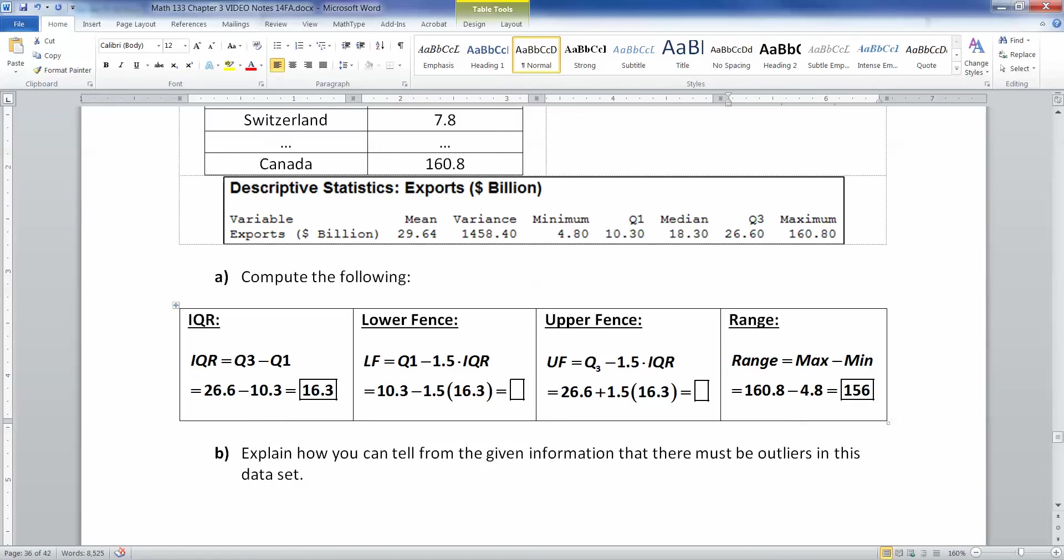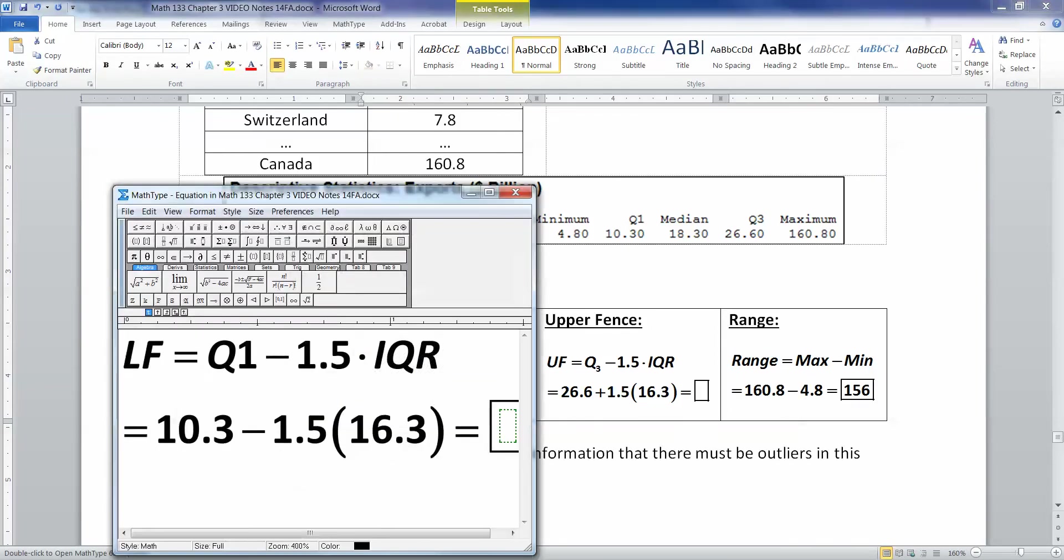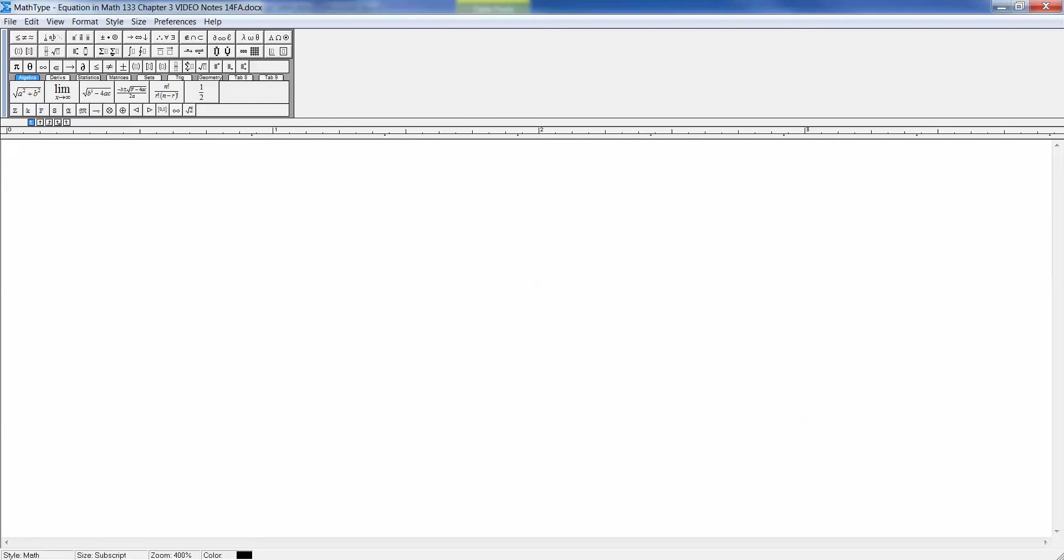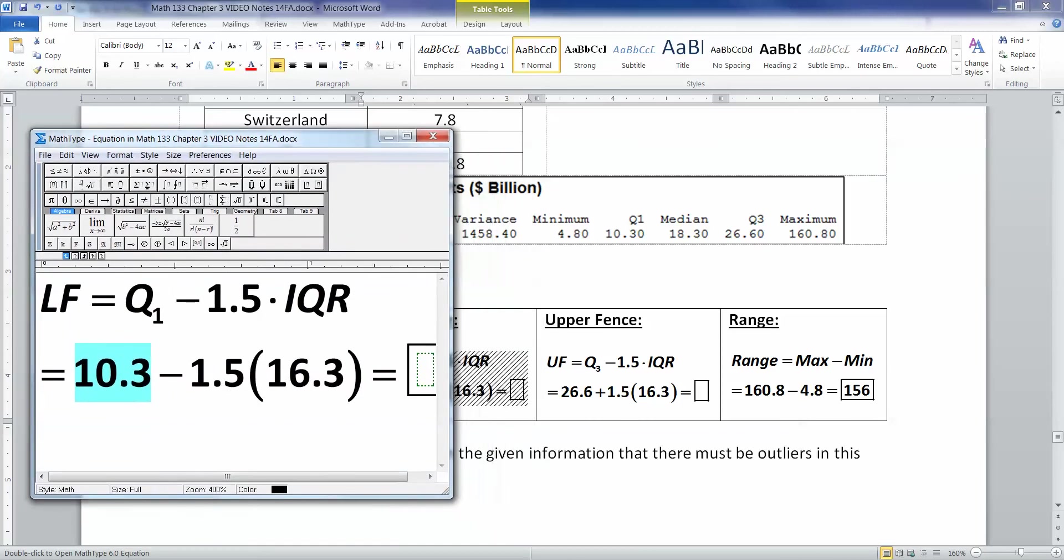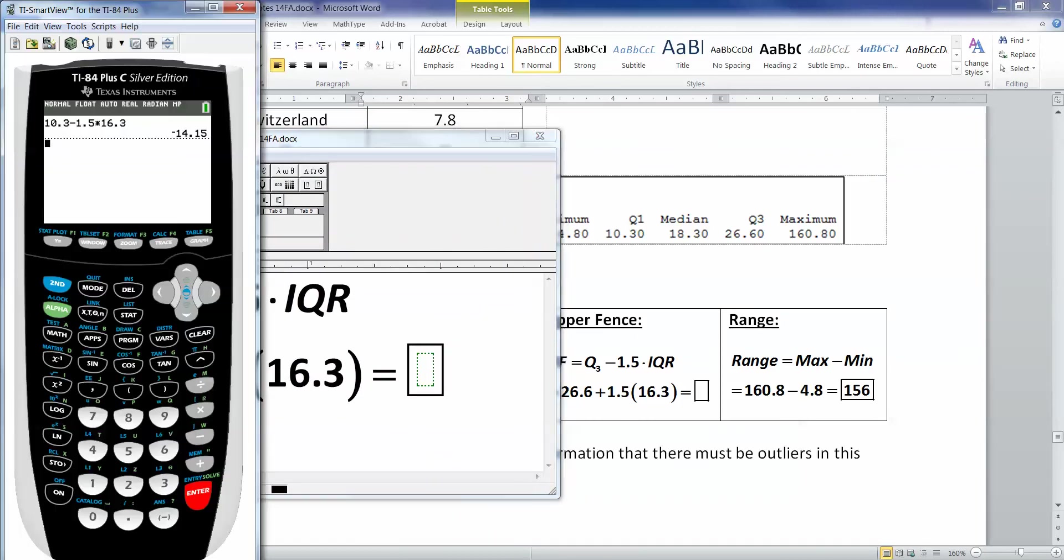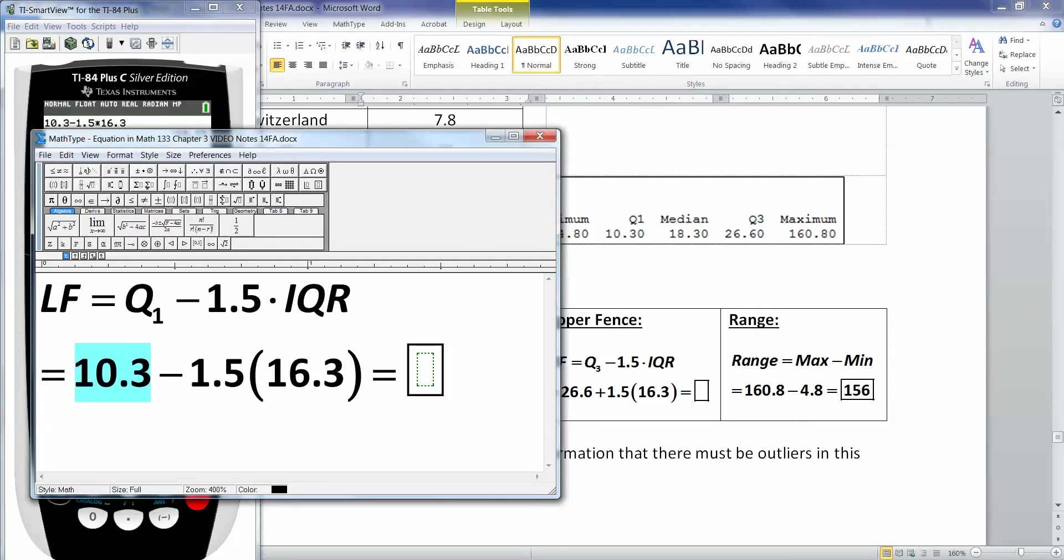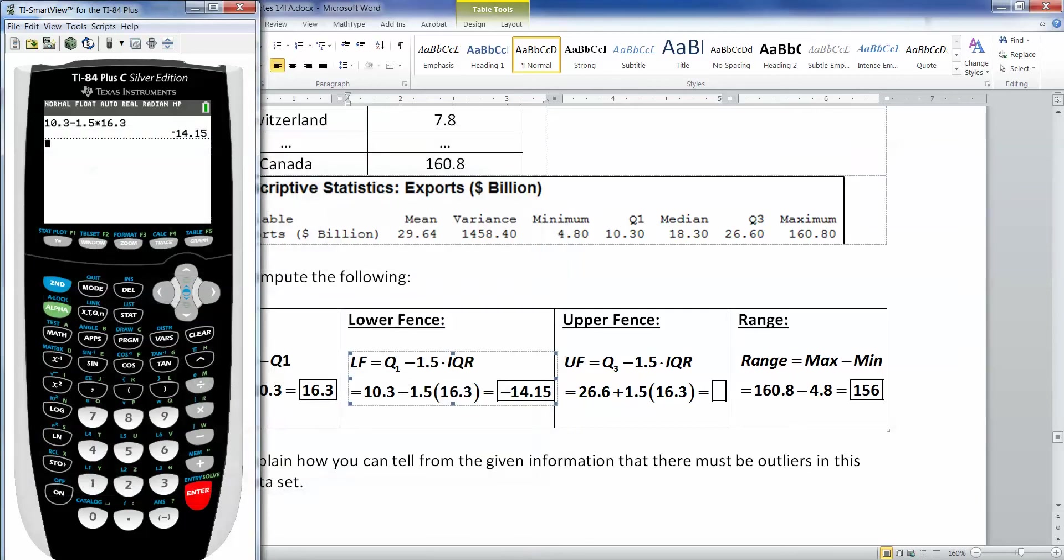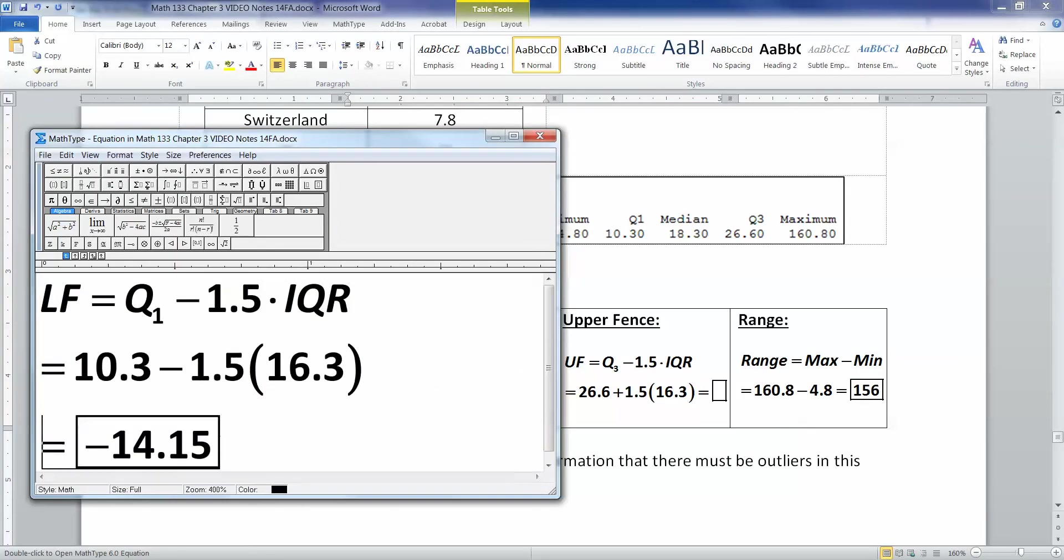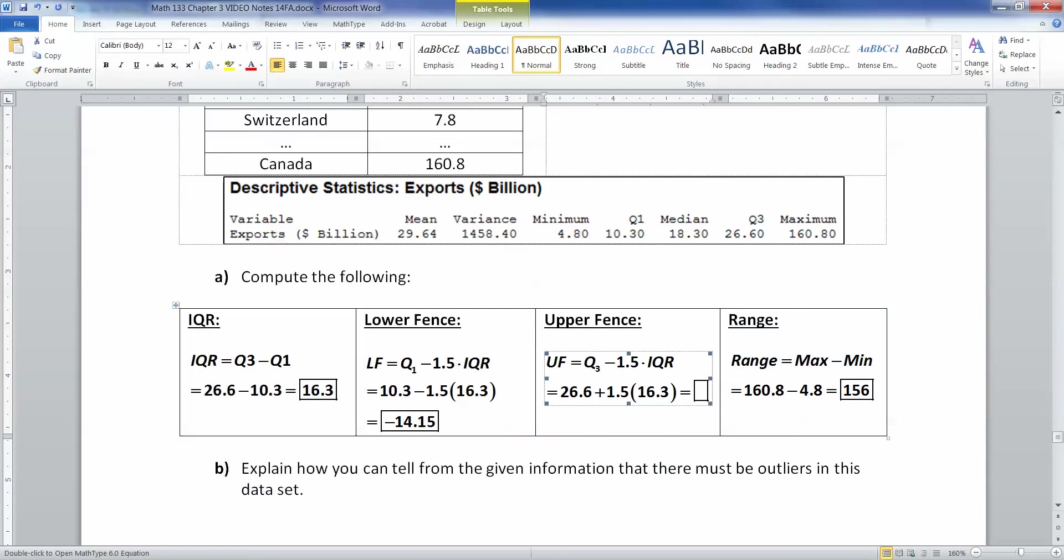So there they are. Now, the upper fence and the lower fence. The lower fence is Q1 minus 1.5 times the IQR. So the Q1 was 10.3, 10.3. And then you take away 1.5 times 16.3. So when I do it with the calculator, 10.3 minus 1.5 times 16.3 makes negative 14.15.